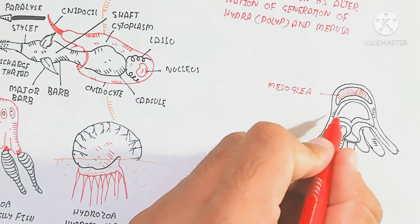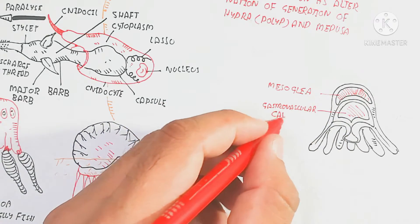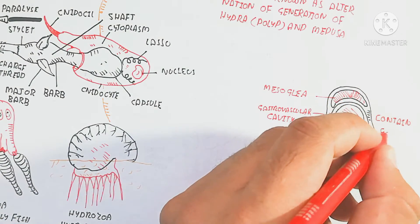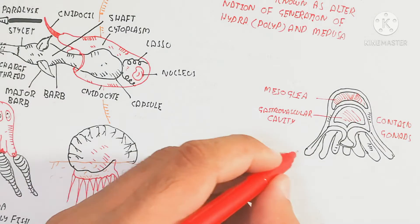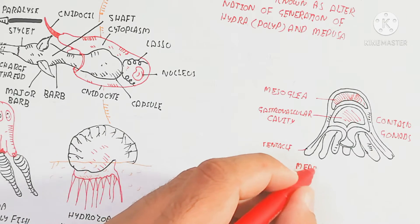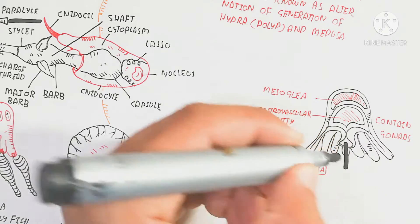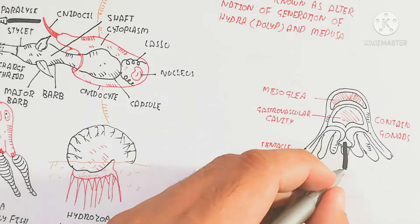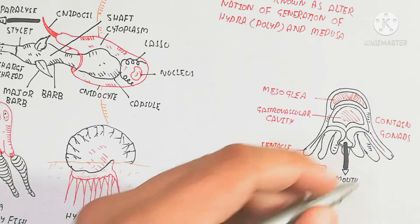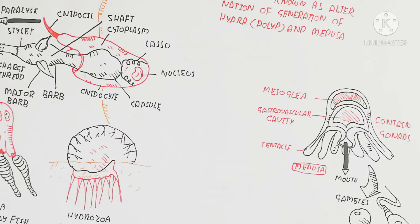The medusa stage resembles a jellyfish and contains gonads. Cnidarians are hermaphroditic, meaning they contain two sexes: female and male. They produce eggs and sperm into the water. Sperm move toward the egg by chemotactic movement to fertilize it, and this fertilization produces a zygote. The mouth is used for feeding and capturing zooplankton and phytoplankton.